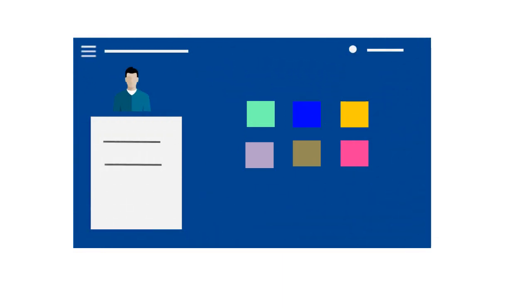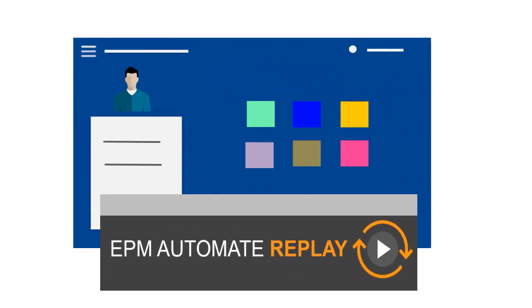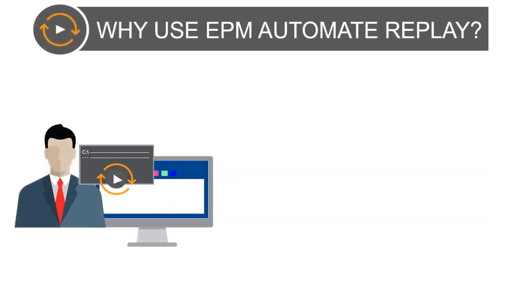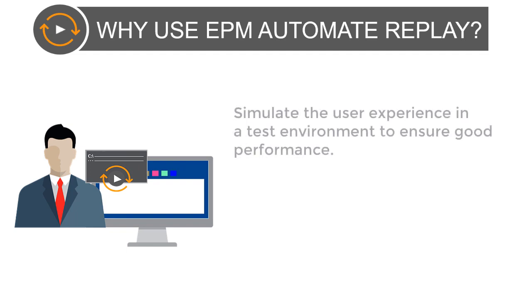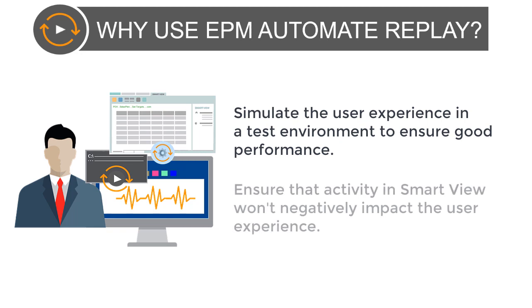In this overview for service administrators, we'll show you the highlights of using the EPM Automate Replay command. EPM Automate is a command line utility that you can install on client machines. The Replay command lets you simulate the user experience in a test environment under heavy load to evaluate performance before migrating the environment to production. This lets you ensure that the load or other activities performed in Smart View won't negatively impact the user experience during concurrent activity.